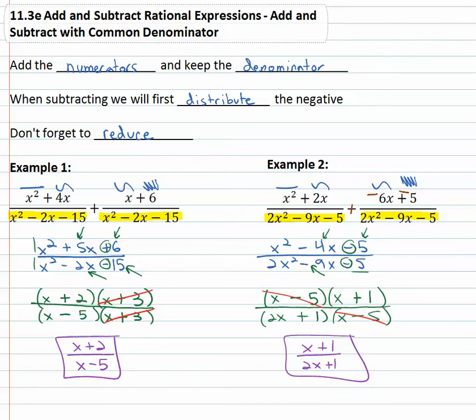Add the numerators, keep the denominators, make sure you've distributed the negative before you start anything and then reduce your final answer.